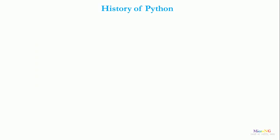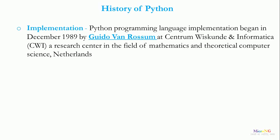Let us see the history of Python language. The implementation of Python programming language began in December 1989 by Guido van Rossum at CWI, a research center in the field of mathematics and theoretical computer science in the Netherlands.